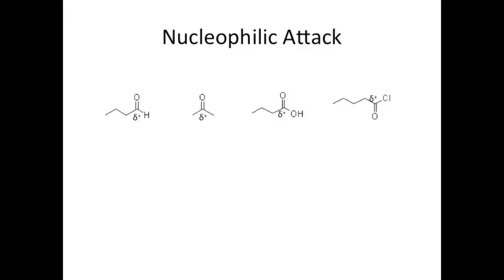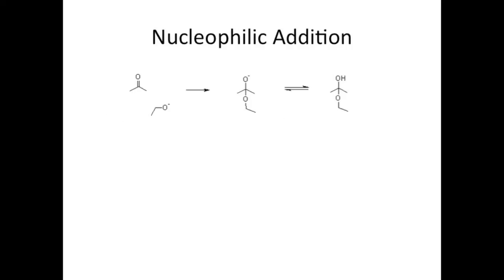There are two different groups: nucleophilic addition and nucleophilic acyl substitution. The functional groups that undergo addition are aldehydes and ketones. In this example I have acetone, and ethoxide is the nucleophile. The nucleophile attacks the carbonyl carbon, forcing the double bond to push its electrons up on the oxygen. A tetrahedral intermediate is formed, and that's a hallmark of this reaction mechanism. A tetrahedral intermediate is always formed.